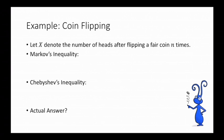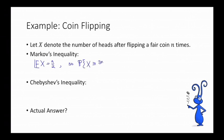Our first example is coin flipping. Let x denote the number of heads that we get after flipping a fair coin n times. We can use both Markov's inequality and Chebyshev's inequality to bound the probability that we see more than 3n/4 heads. The expected value of x is equal to n/2. So Markov's inequality tells us that the probability that x is greater than or equal to 3n/4 is at most n/2 — that's the expectation — divided by 3n/4, which simplifies to 2/3. So that's less than 1, but it's not great.